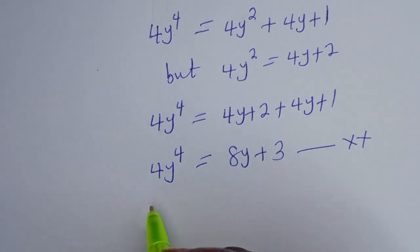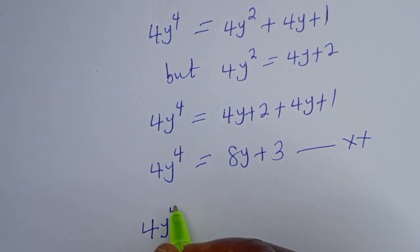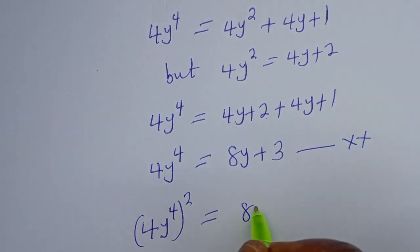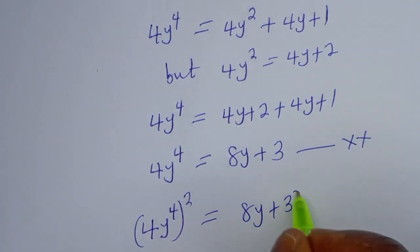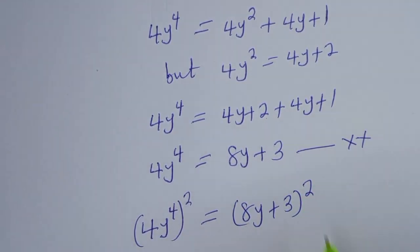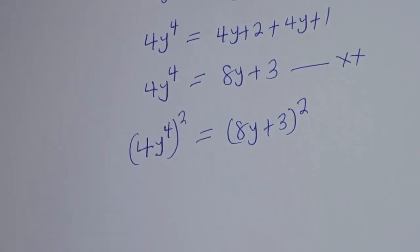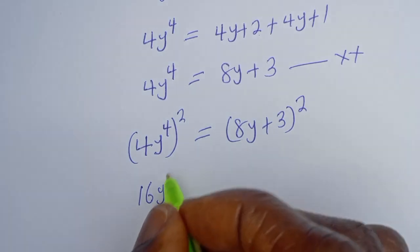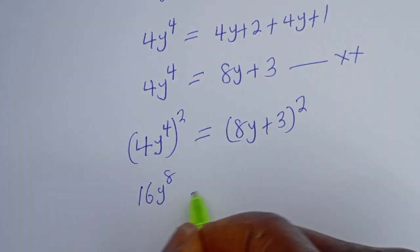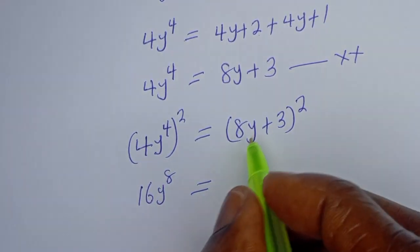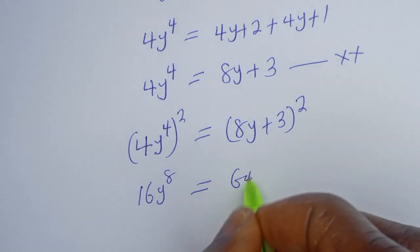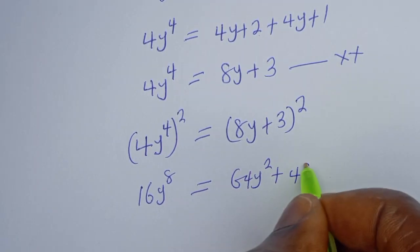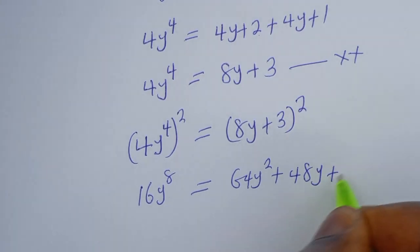Now squaring both sides of the double star equation: (4y to the power 4) squared equals (8y plus 3) squared. This gives 16y to the power of 8 equals 64y squared plus 48y plus 9.